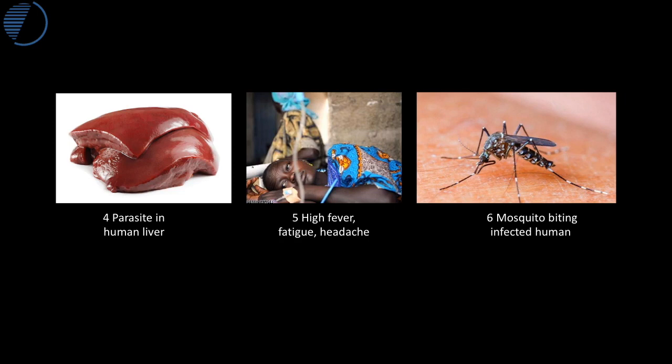Especially vulnerable are elderly people and children under five. For the working-age population, malarial outbreaks are also significant because the parasitic infection can mean you can't go to work, affecting economic productivity. If there are high levels of endemic malaria in the population, this may reduce the productivity of the workforce.